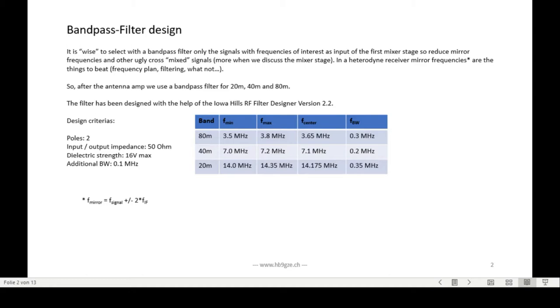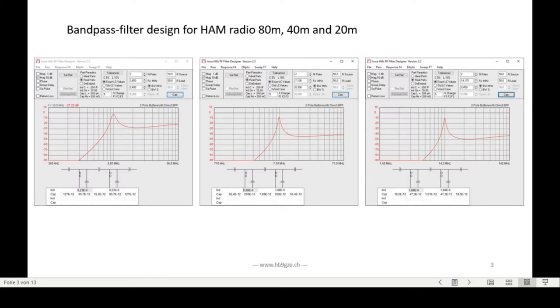An intermediate frequency is a signal that is on your actual receiving signal plus or minus two times the intermediate frequency away. So that's why we have to have a bandpass filter at the input. These are the calculated filters I'm using in the Yova Hill filter calculator, the Yova Hill RF filter designer. It's an old program but very nice to use. You see three results here for 80 meter, 40 meter, and 20 meter.